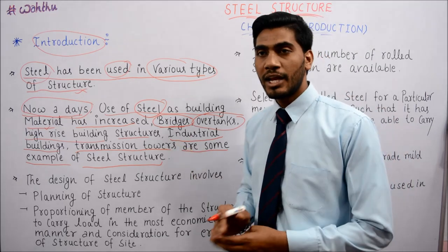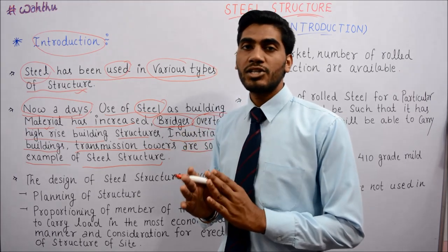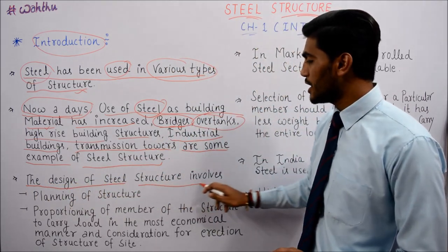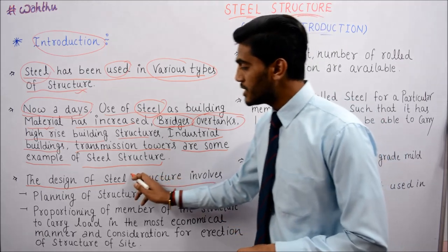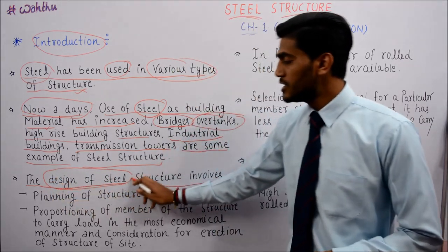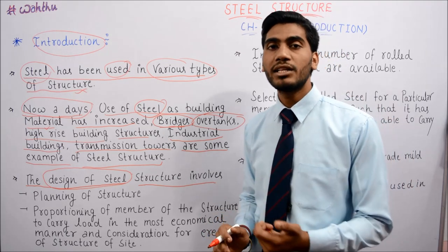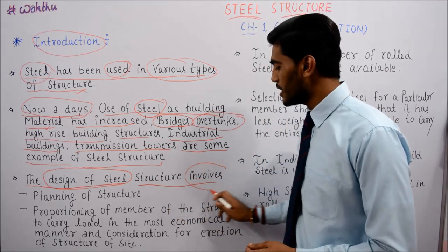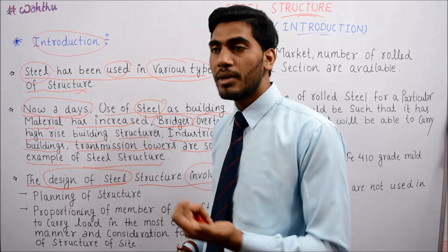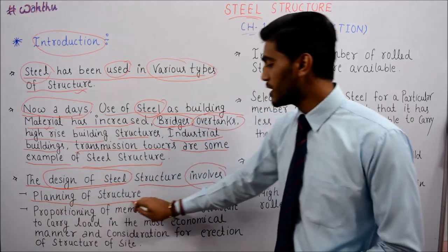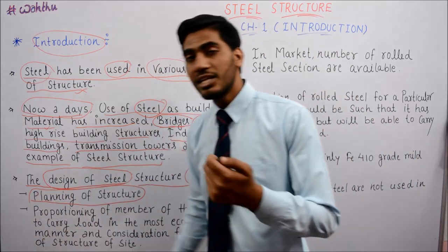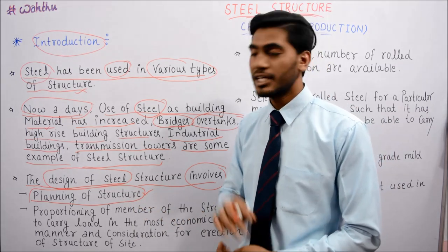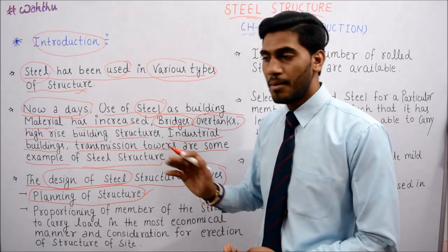When we design steel for any structure, there are certain things we must consider. The first step is Planning of the Structure - if we have to design any steel structure, we must first have a plan, a strategy for how we will place the steel structure.